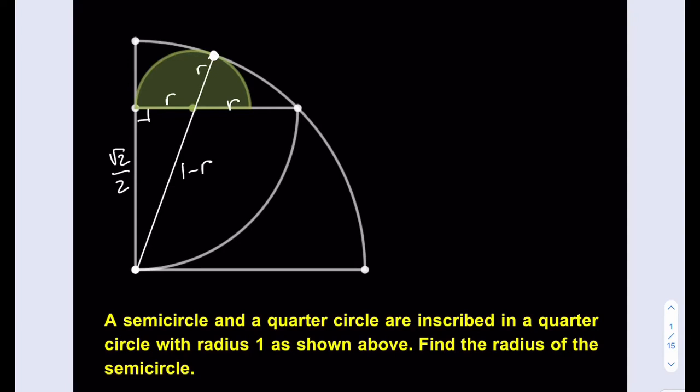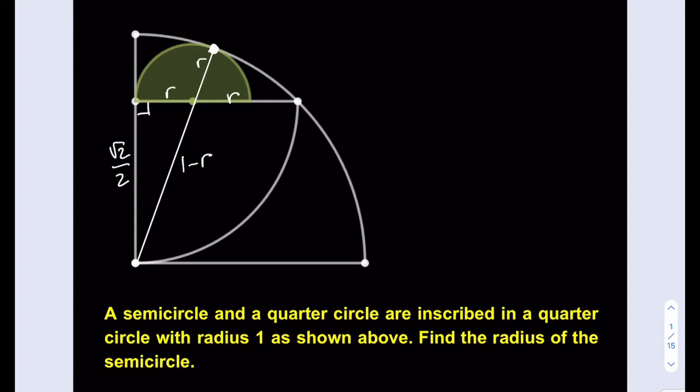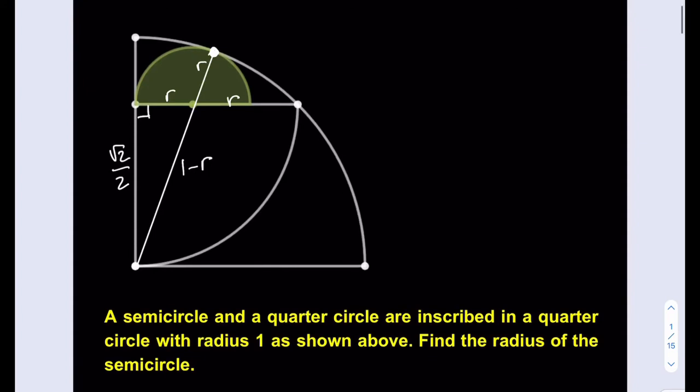So basically, what I get here is a really cool relationship that allows me to find r. That's why I consider this problem easier than others. I'm going to shade the right triangle that I'm going to use and set up my equation.